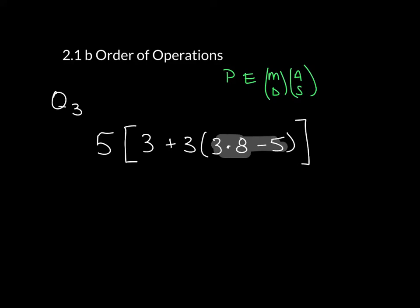Now again, remember that this is understood to be 3 times the quantity of all of this. So even though they're not there, all of this inside this parentheses is grouped together. All right, so let's go through and we're going to do 3 times 8, which is 24 minus 5 and copy everything else down.